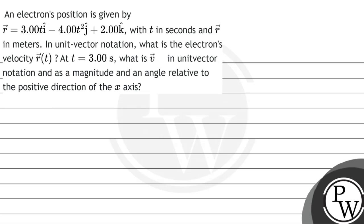Hello students, let's read this question. An electron's position is given by r vector equals 3t î minus 4t² ĵ plus 2k̂, with t in seconds and r vector in meters. In unit vector notation, we have to find the electron's velocity.